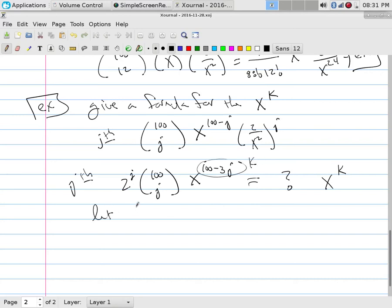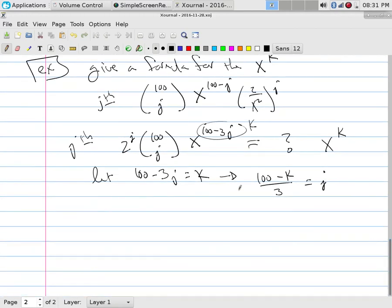So if I let 100 minus 3j equal to k, well, that tells me that I want to get rid of all of my j's, and so to do that, I just solve for it. And so we would have 100 minus k divided by 3 has to be equal to j.